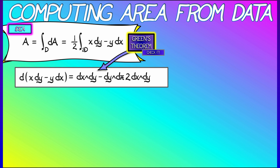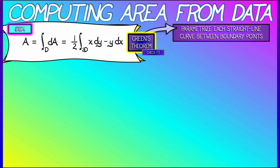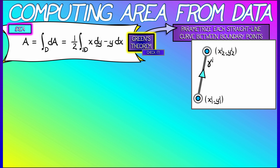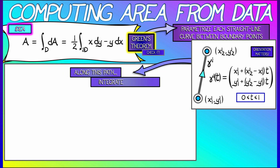Now we take each edge γ_i going from (x1, y1) to (x2, y2) and parameterize it. γ_i(t) has x-coordinate x1_i + (x2_i − x1_i)t and y-coordinate y1_i + (y2_i − y1_i)t, where t goes from 0 to 1. That gives us a straight-line path from the start point to the end point.